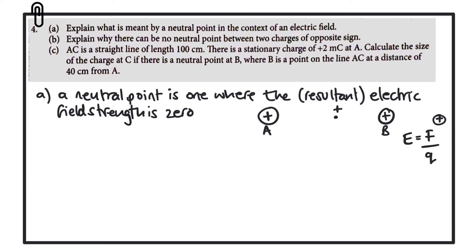Let's consider what would happen to this test charge because of A. Because our test charge is positive and A is positive, the two are going to repel, so the test charge would experience a force acting to the right — labeled as A to indicate the force felt because of A. If we look at B, because they're both positive, it will act in the opposite direction, giving a force because of B.